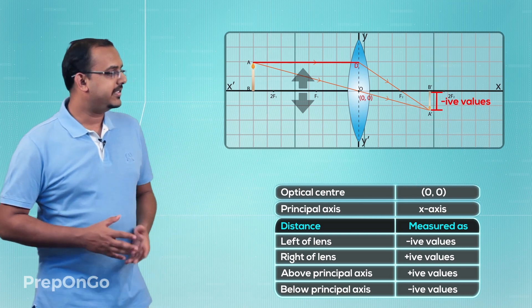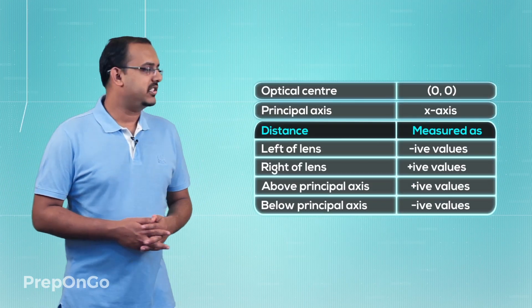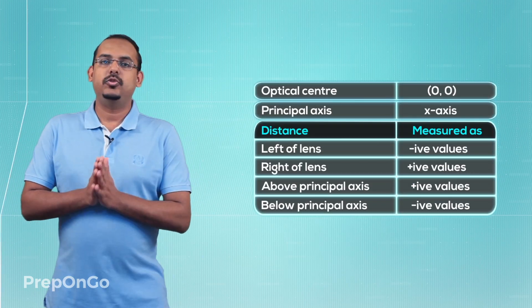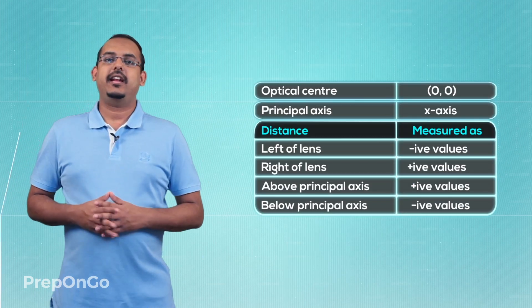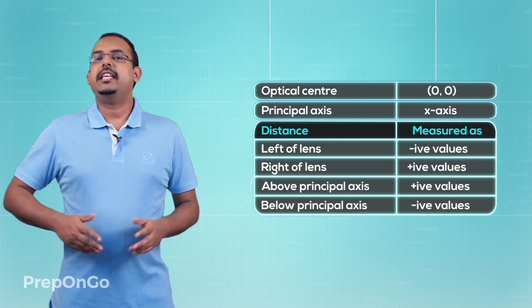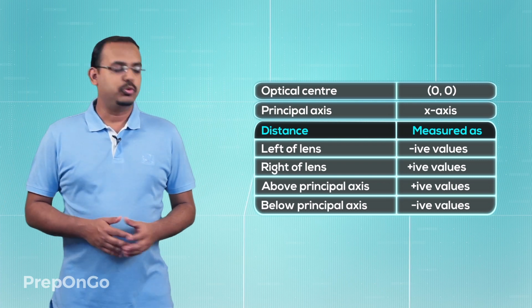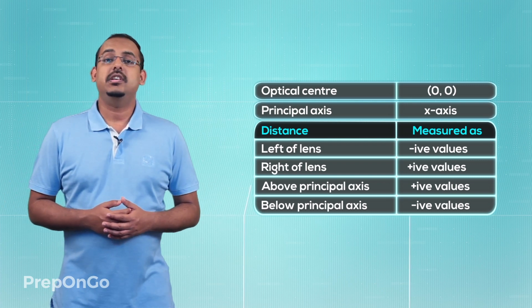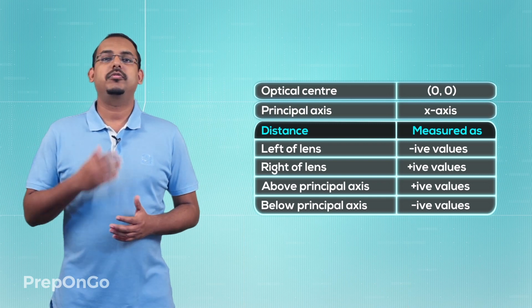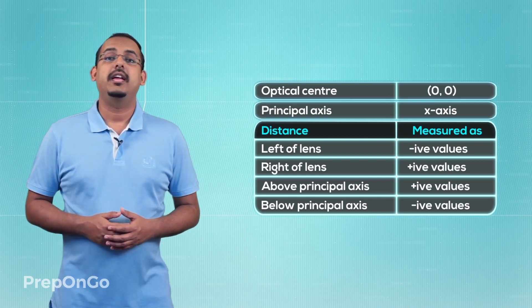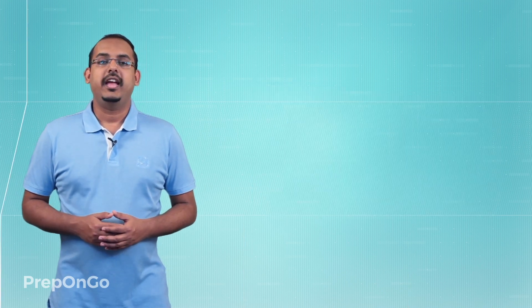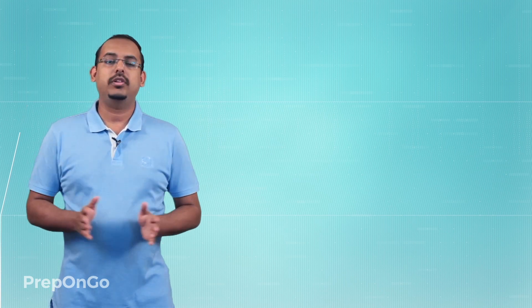So these are all the concepts related to sign conventions that are generally used while solving ray diagrams with lenses. Now in the next lecture we'll use these concepts of sign convention and we'll also study about the concepts of the lens formula and the magnification formula, and we'll see how we apply all these concepts for solving ray diagrams and to analyze these ray diagrams numerically. See you in the next lecture.